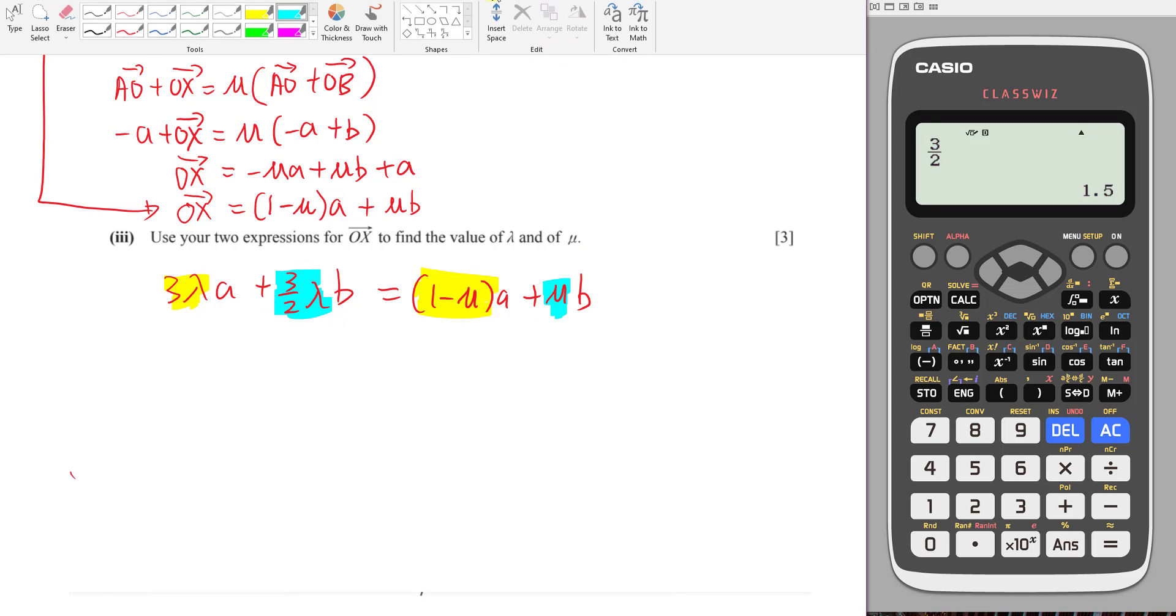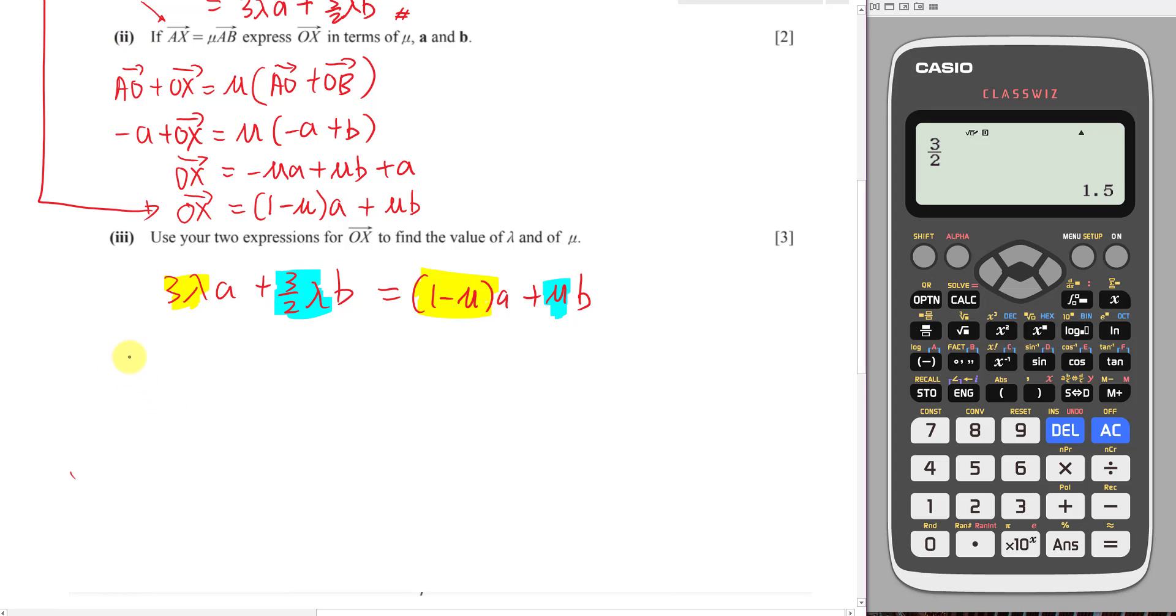I want to compare the value beside the B here. So over here I will just write comparing A. Then I have 3 lambda equals 1 minus mu. Then if I'm comparing B, I will do the same thing. Because over here you only have one equation but you have four unknowns like lambda, mu, A, and B. So the comparing method is the best way of solving this. 3 over 2 lambda equals mu.